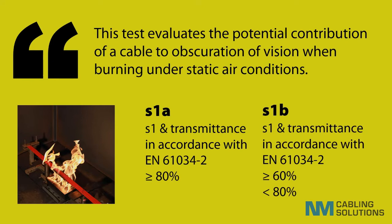Effectively, transmittance is the amount of light that can be measured through the smoke produced. More than 80 percent is classified as S1a, and between 60 and 80 percent it is S1b. Below 60 percent it is a fail and could actually impact upon the claimed S1 rating.